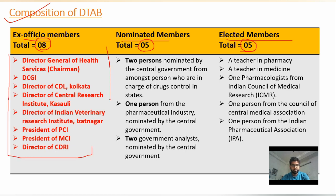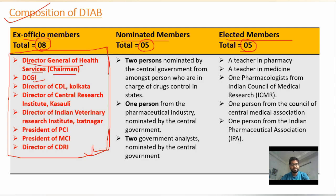The ex-officio members are most important for exams. The Chairman of DTAB is the Director General of Health Services, the Member Secretary is the DCGI, and other ex-officio members include the Director of CDL, Director of CRI (Central Research Institute, Kasauli), Director of Indian Veterinary Research Institute (Izatnagar), President of PCI, President of MCI, and Director of CDRI (Central Drug Research Institute, Lucknow).